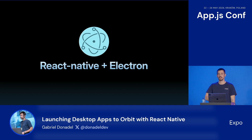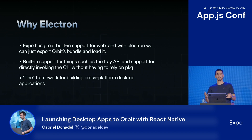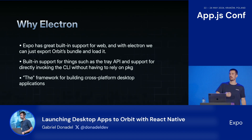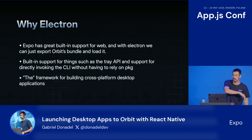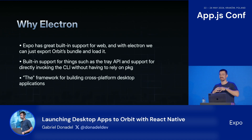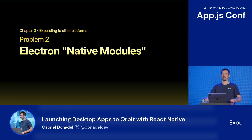So the solution we found was to rely on the great support that React Native Web and Expo CLI already provide for the browser, and just go with Electron plus React Native Web. That way, we could export Orbit's bundle using React Native Web and load it inside this desktop environment through Electron. Electron comes with full support for things we would need, such as the Win32 API. And as it essentially just runs a Node.js process, we could directly invoke our JS CLI without even having to rely on PKG to create the single executable application. There's also the fact that Electron has widespread adoption in the software industry, and a lot of big desktop apps already use it — such as Linear, VS Code, Discord, and Slack.